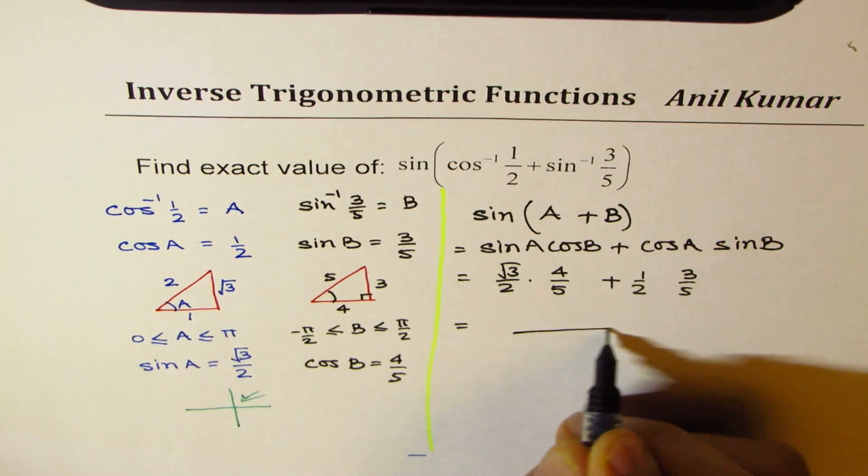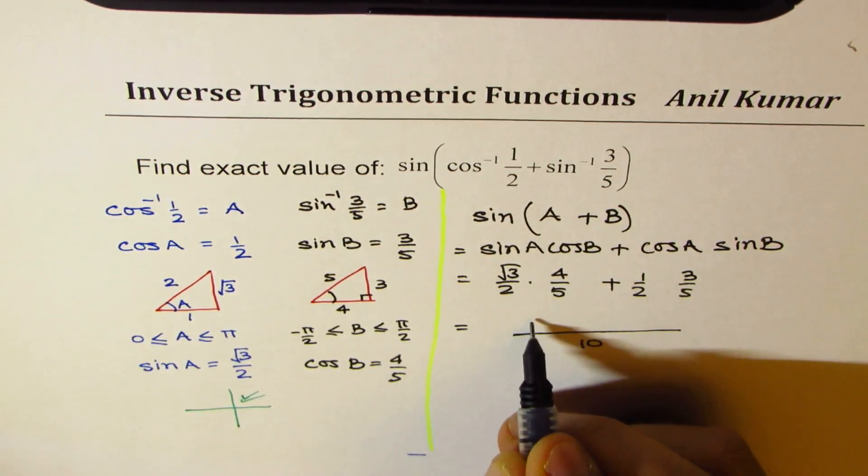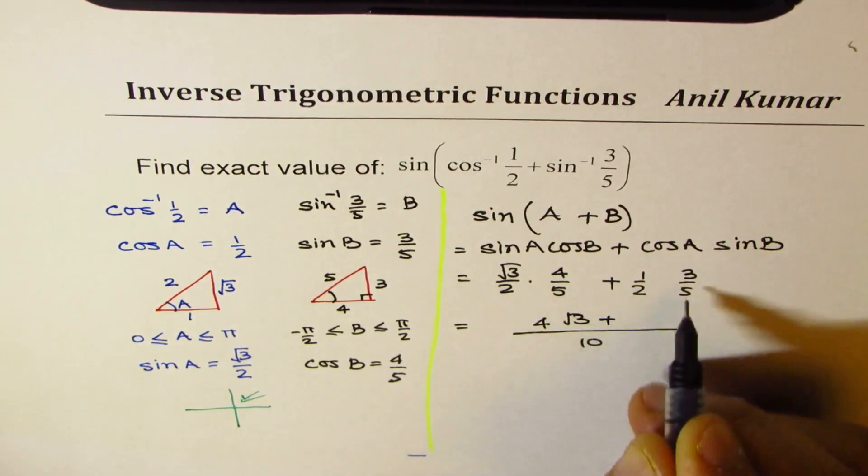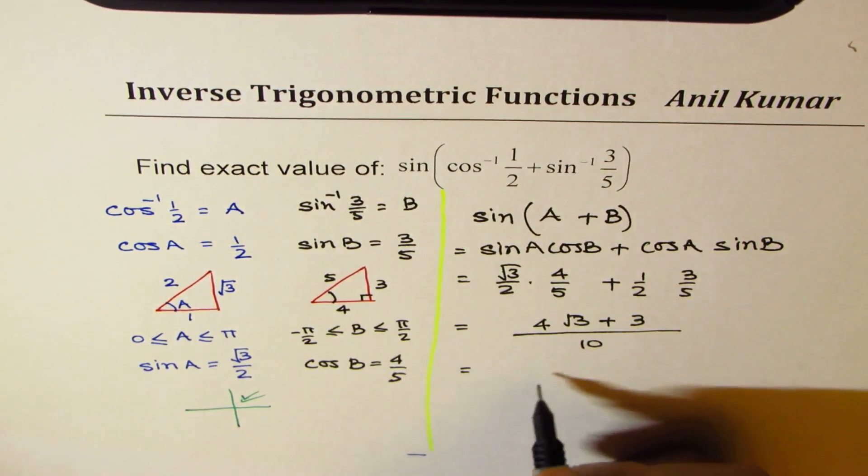So let's add them to get the result. Common denominator is 10. Numerator is 4 times square root 3 plus 3.